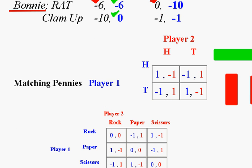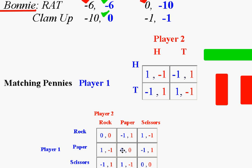Now let's look at another game called matching pennies. In this game, one player is called the evens player. If two people slam down a coin at the same moment and they're both heads — player one heads, player two heads — player one wins a penny (plus one) but player two loses a penny (minus one). Similarly if they're both tails, player one wins and player two loses. Player two is called the odds player because if the coins don't match — heads-tails or tails-heads — then player two wins the penny. We want to see: is there a Nash equilibrium and does either player have a dominant strategy?